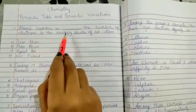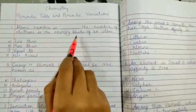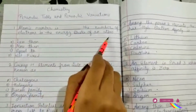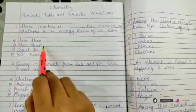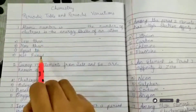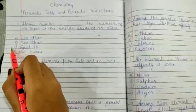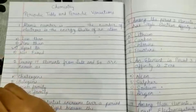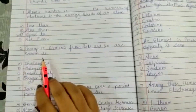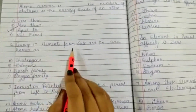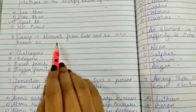Atomic number is the number of electrons in the energy shell of an atom — less than, more than, equal to, or not fixed? The correct answer is option C: equal to.